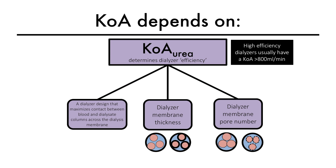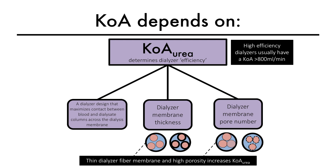KOA urea determines dialyzer efficiency. KOA depends on the dialyzer design, dialyzer membrane thickness, and pore number. A dialyzer design that maximizes contact between blood and dialysate columns, as well as a thin dialysis membrane with high porosity, results in a higher efficiency dialyzer with a high KOA — typically more than 800 milliliters per minute.